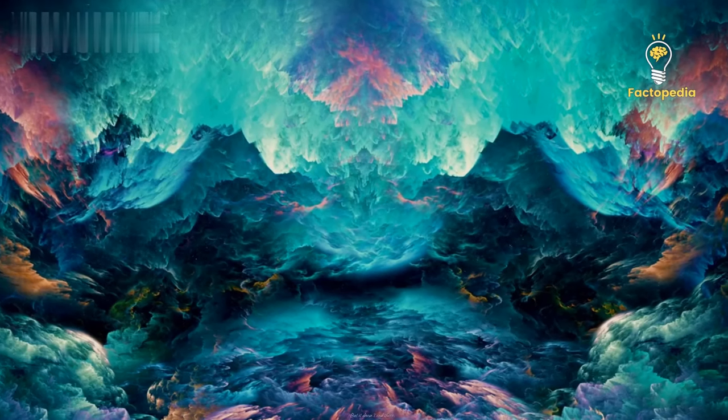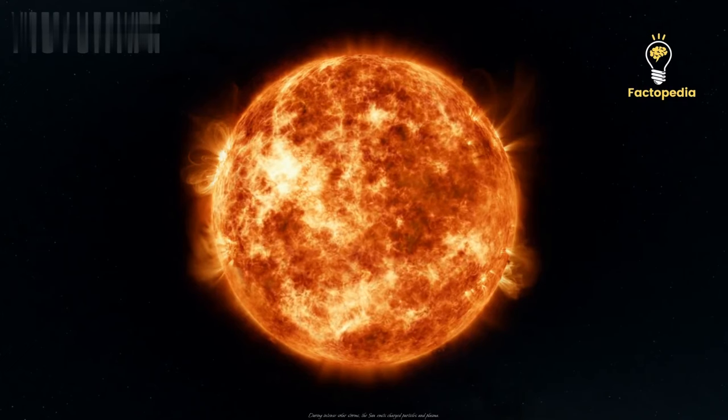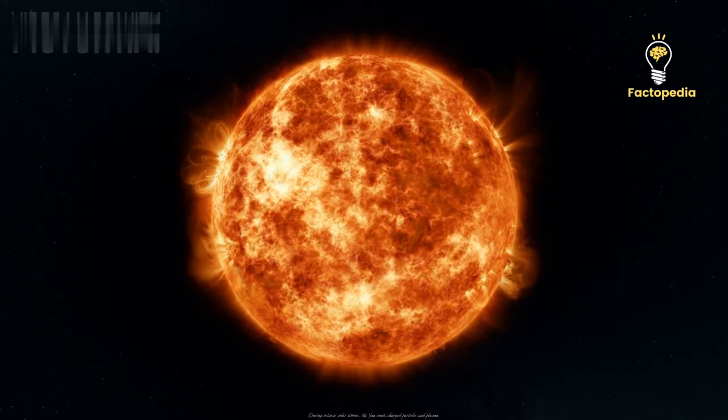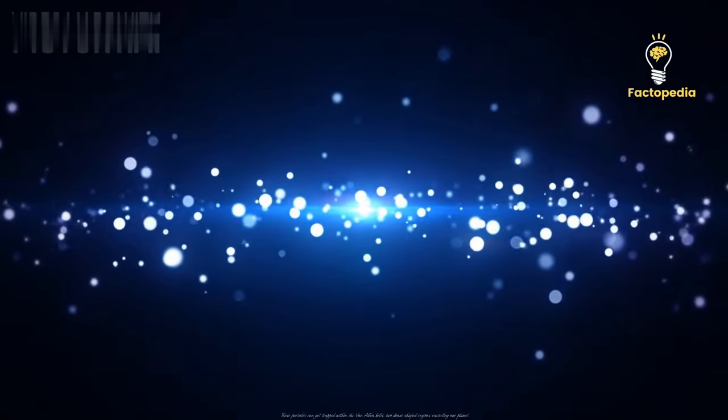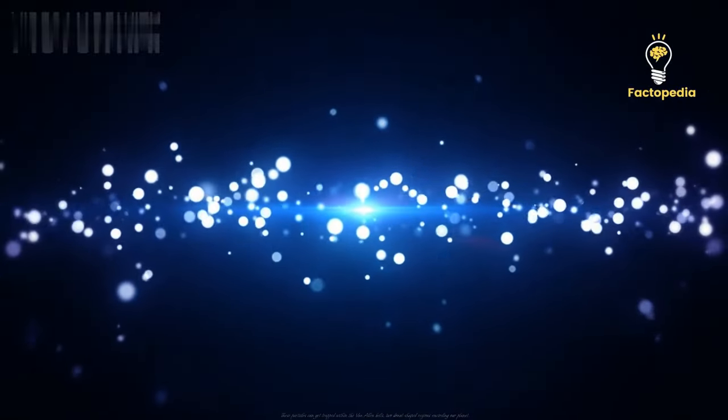But it doesn't end there. Our closest star, the Sun, has a role to play in this cosmic dance. During intense solar storms, the Sun emits charged particles and plasma. These particles can get trapped within the Van Allen belts, two donut-shaped regions encircling our planet.